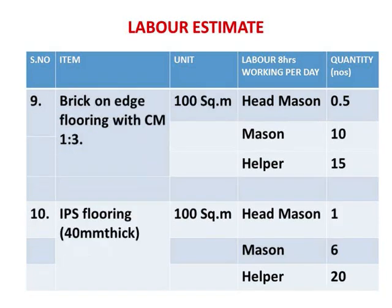Brick on edge flooring is done in pavement areas, parking areas, and open areas outside. Constants and labor outturn are given for this, with a unit of 100 square meters. IPS flooring 40 mm thick is also tabulated for 100 square meters with constants and labor outturn given.